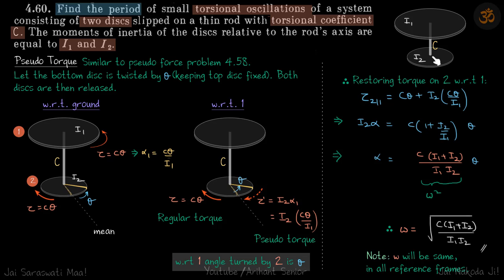We have two disks of moment of inertia I1 and I2 that are connected with a rod. The torsional coefficient of this system is C, which means if you turn both disks relatively by an angle theta, then the torque on each of the disks will be C theta. We need to find the period of oscillations.